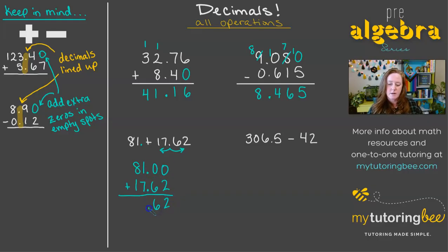So let's go ahead and start adding. 0 plus 2 is 2. 0 plus 6 is 6. And then I'm going to drop down the decimal. 1 plus 7 is 8, and then 8 plus 1 is 9. Now we have 98 and 62 hundredths.